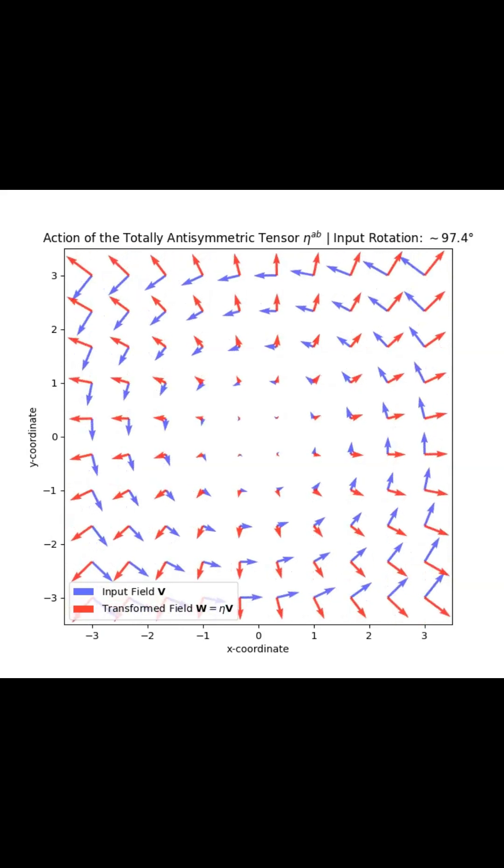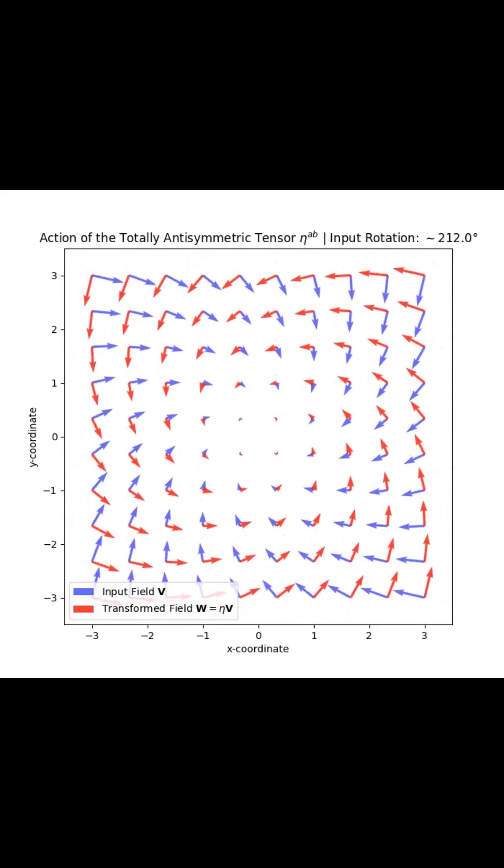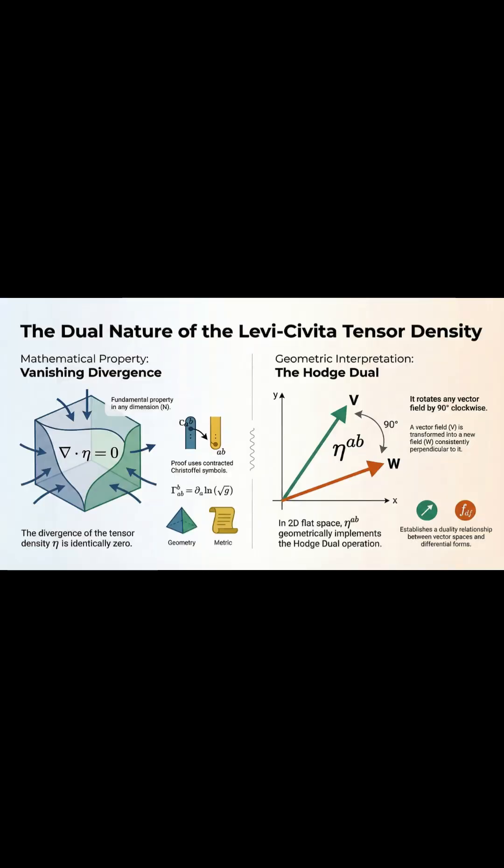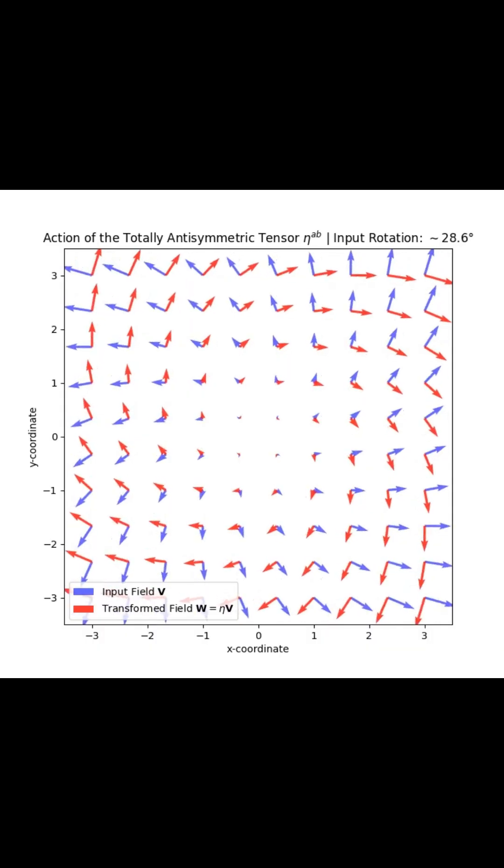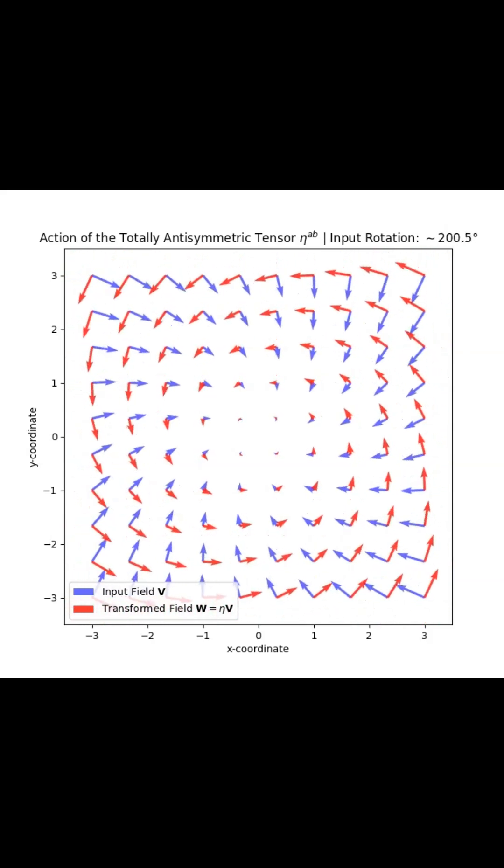And you can literally see it happen. It takes any vector field and spits out a new one that's consistently rotated exactly 90 degrees clockwise. This visual really drives home how the tensor forges these crucial links between vector spaces and their differential forms.